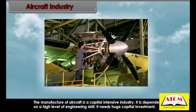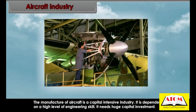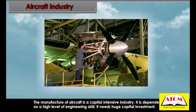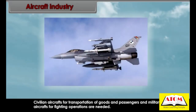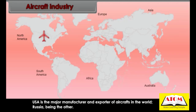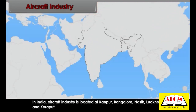The manufacture of aircraft is a capital-intensive industry dependent on a high level of engineering skill and huge capital investment. Both civilian aircrafts for transport and military aircrafts for fighting operations are produced. The USA is the major manufacturer and exporter; Russia, UK, France, Italy, Canada, Australia, Japan, and China are other important manufacturers. In India, aircraft industry is located at Kanpur, Bangalore, Nashik, Lucknow, and Koraput.